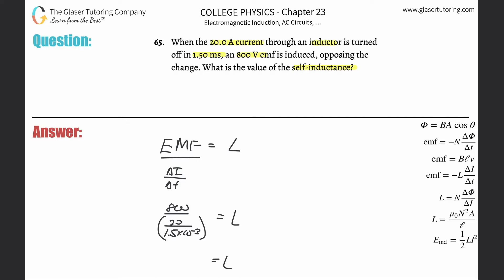Just take out the calculator. It's going to be 800 divided by parentheses, 20 divided by 1.5 times...